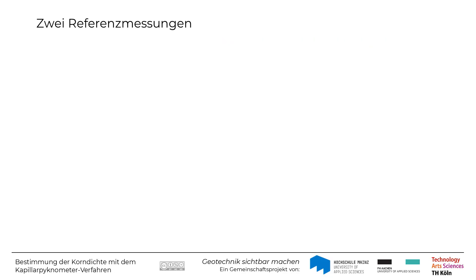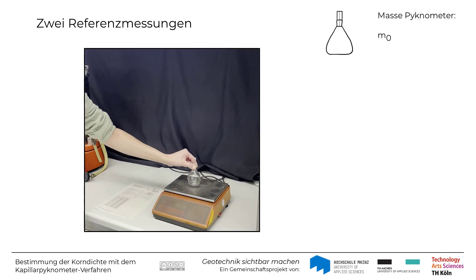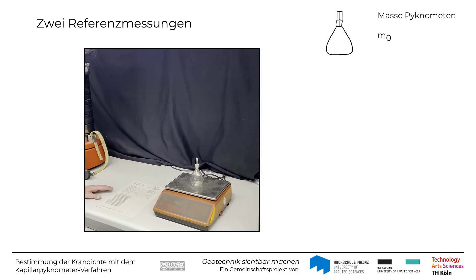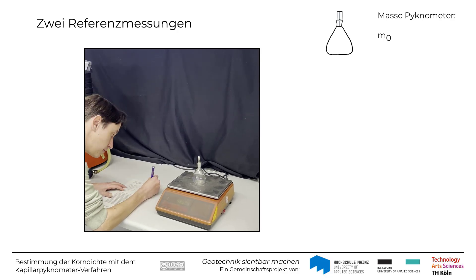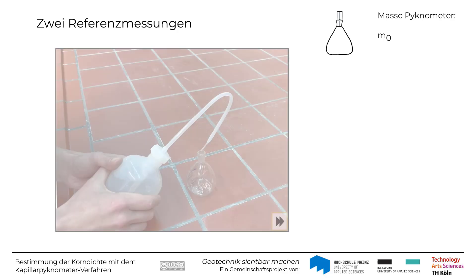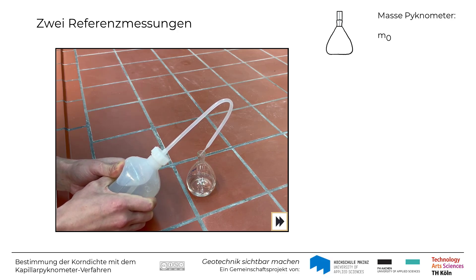Vor dem eigentlichen Versuch werden zwei Referenzmessungen durchgeführt. Zunächst wird das trockene und saubere Pygnometer gewogen und seine Masse M0 notiert. Danach wird das Pygnometer vollständig mit der Kontrollflüssigkeit gefüllt, wofür in der Regel destilliertes, entmineralisiertes oder deionisiertes Wasser verwendet wird.